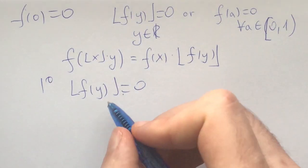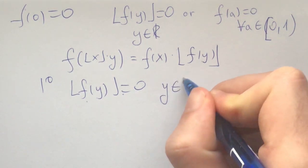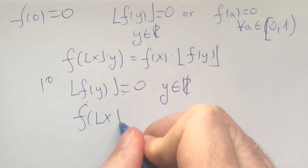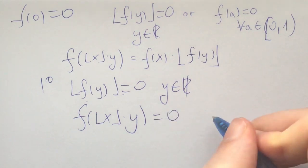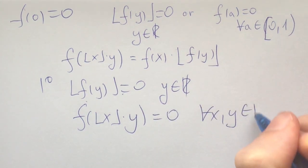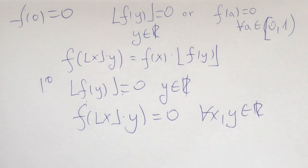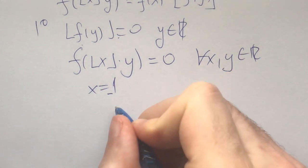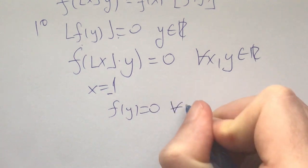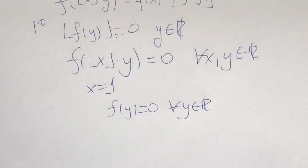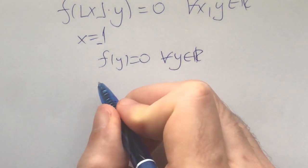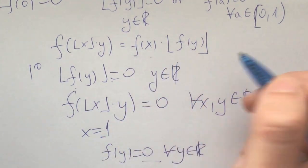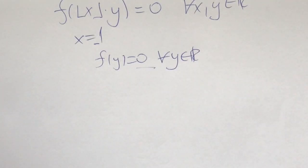If the floor of f of y equals zero for all real y, then f of floor of x times y equals zero for all real x and y. By plugging in x equals one, we get f of y equals zero for all real y. Checking this: the left hand side is zero and the right hand side is zero times zero, which equals zero. So f identically zero is a solution.